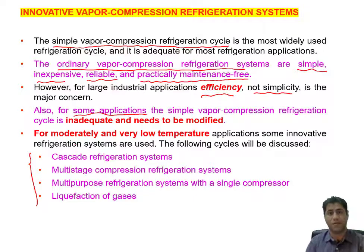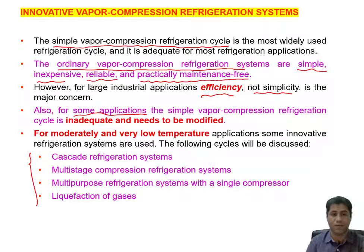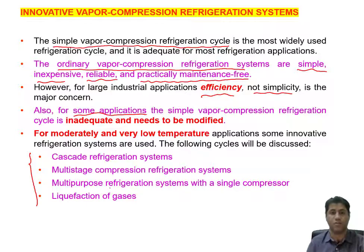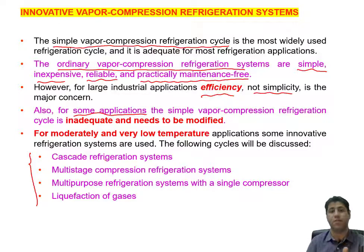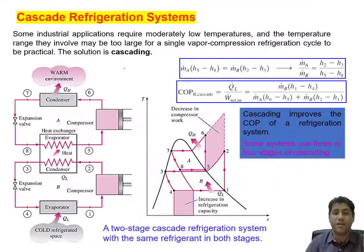Sometimes the requirement is for very low or moderately low temperature. Later I will introduce each of these cycles one by one, and you will see how the simple vapor compression refrigeration cycle is modified to reach low or even very low temperature, or just to use one compressor to reach two different temperatures. The first modified cycle is the cascade refrigeration system.